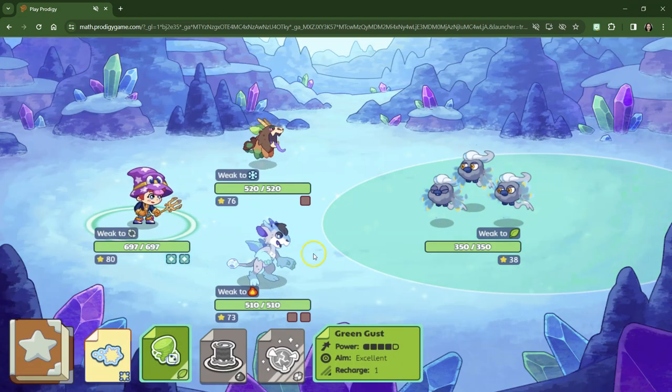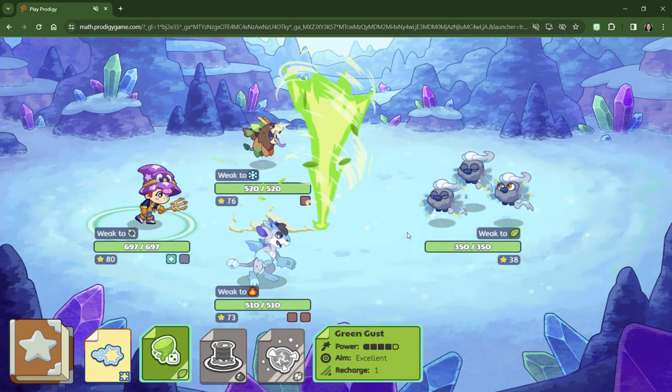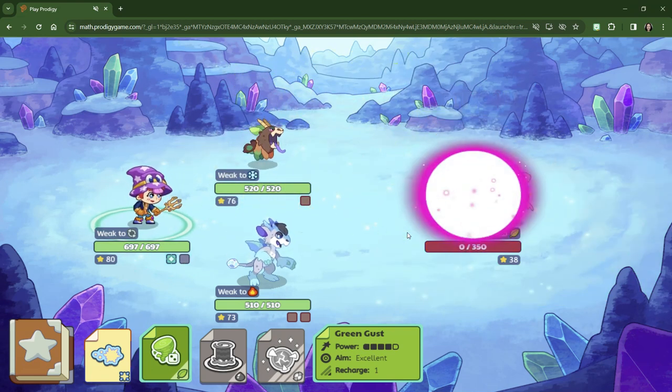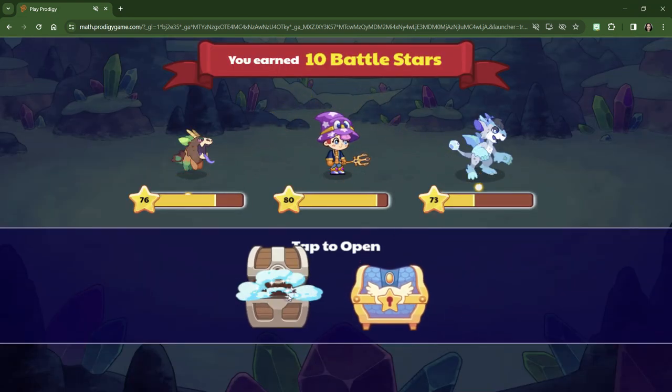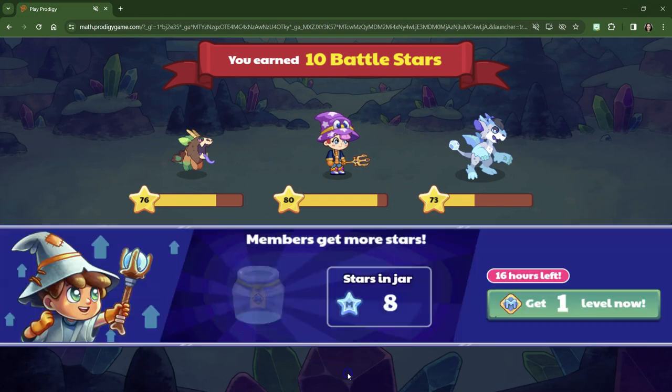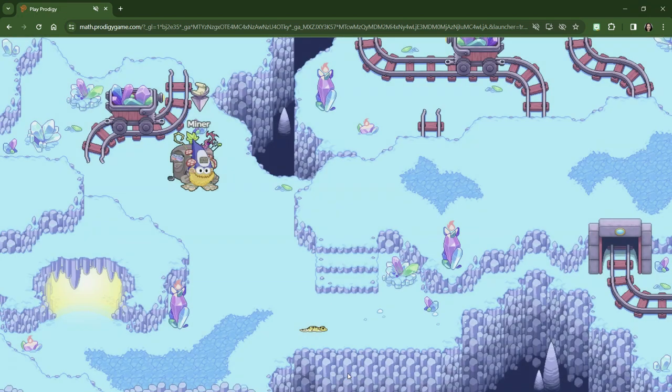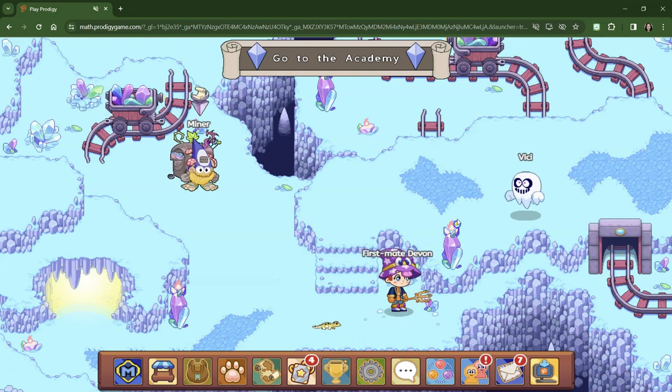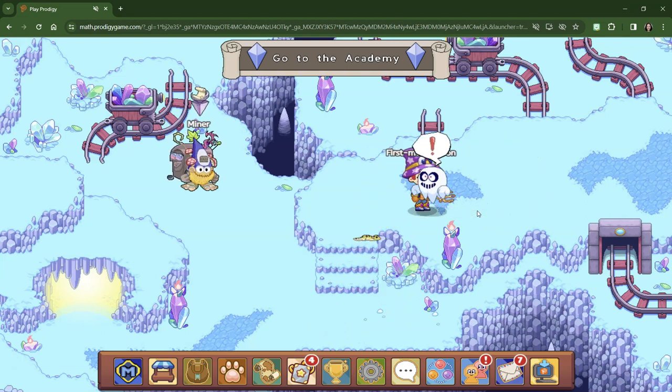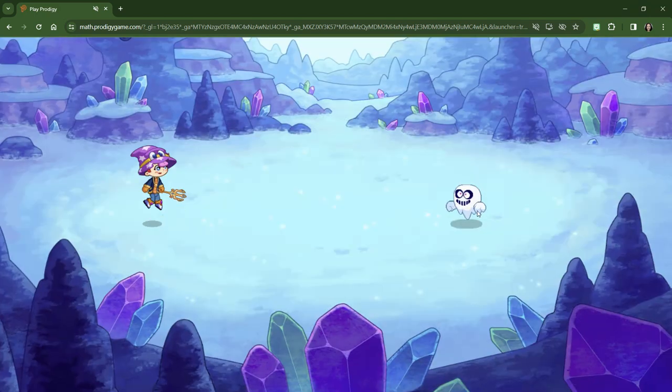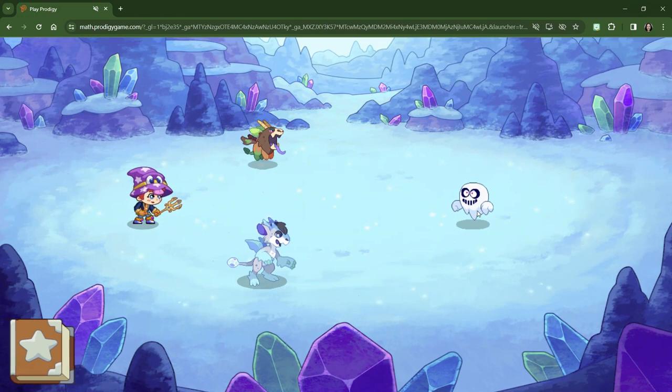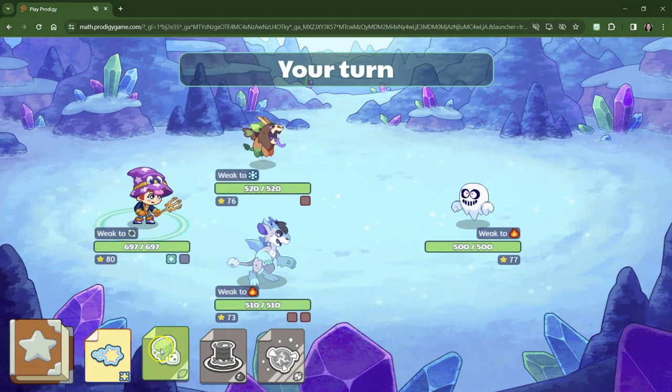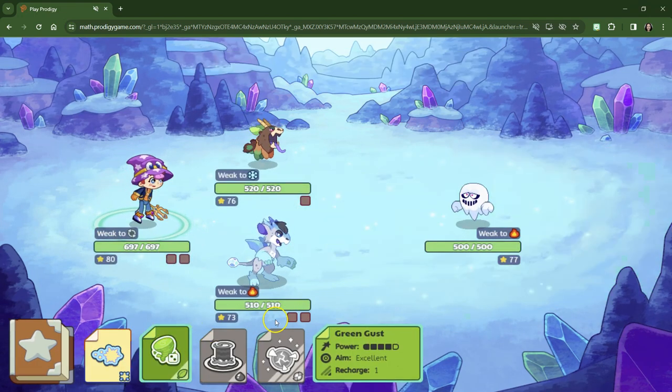All right. Well, we know Green Gust is our best spell right now. Whoa! Green Gust is easily our best spell right now. Okay, this is who we're trying to defeat right here. Capture for our bounty. Oh, we get to Green Gust right away. Boom.